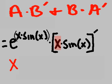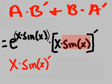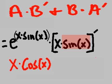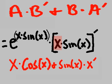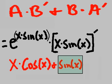I multiply my first factor x times b prime, that's sine of x prime. Sine of x prime is cosine, plus b, which is sine of x, times x prime. And x prime is 1. Sine of x times 1 is sine of x.